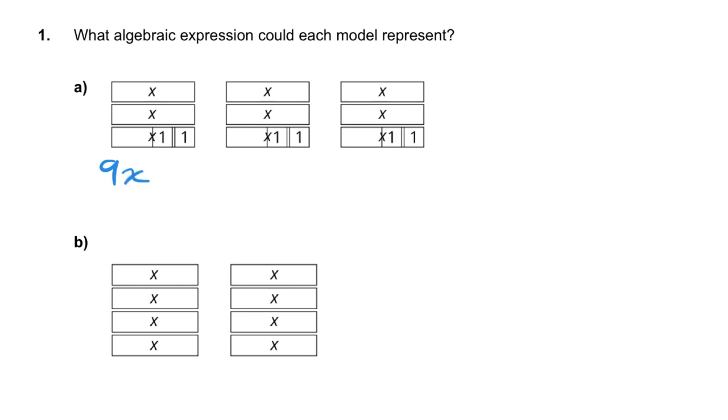And then, here, we have some 1's. 2, 4, 6 1's being taken away from those x's. So we write down, take away 6. That's one way that we could write it.